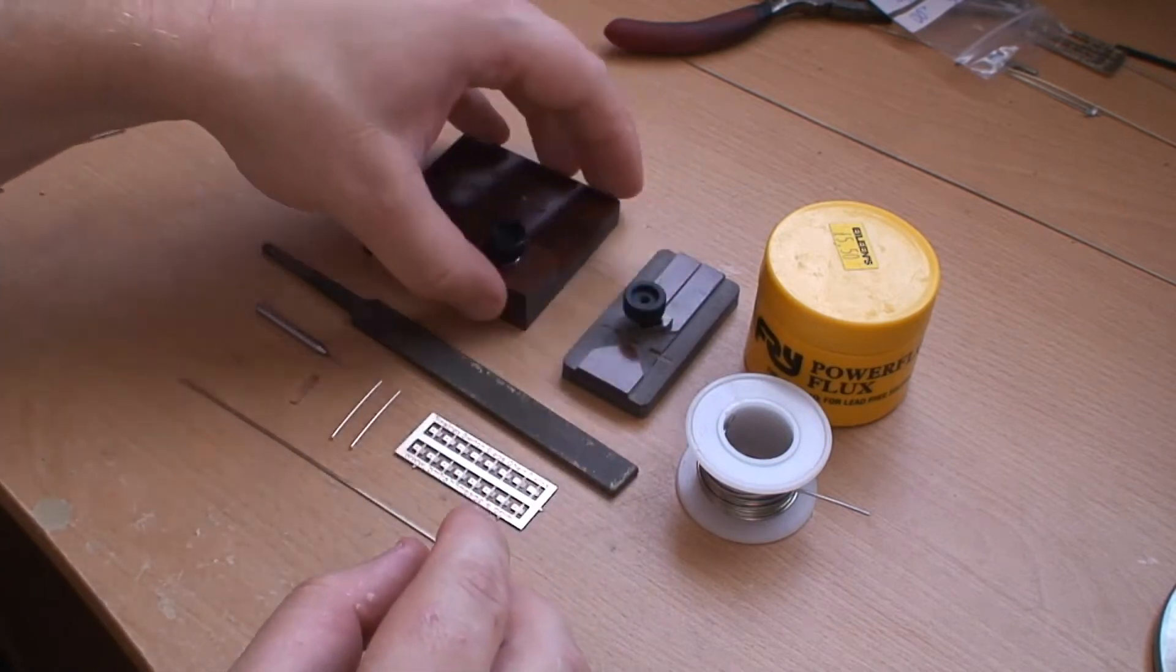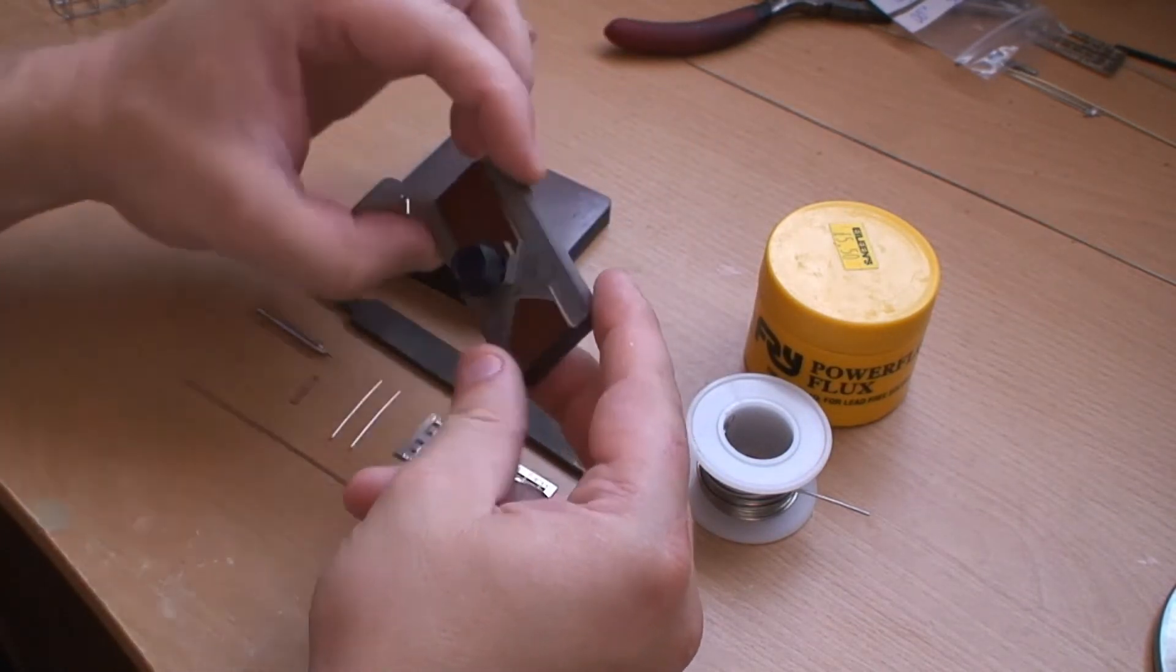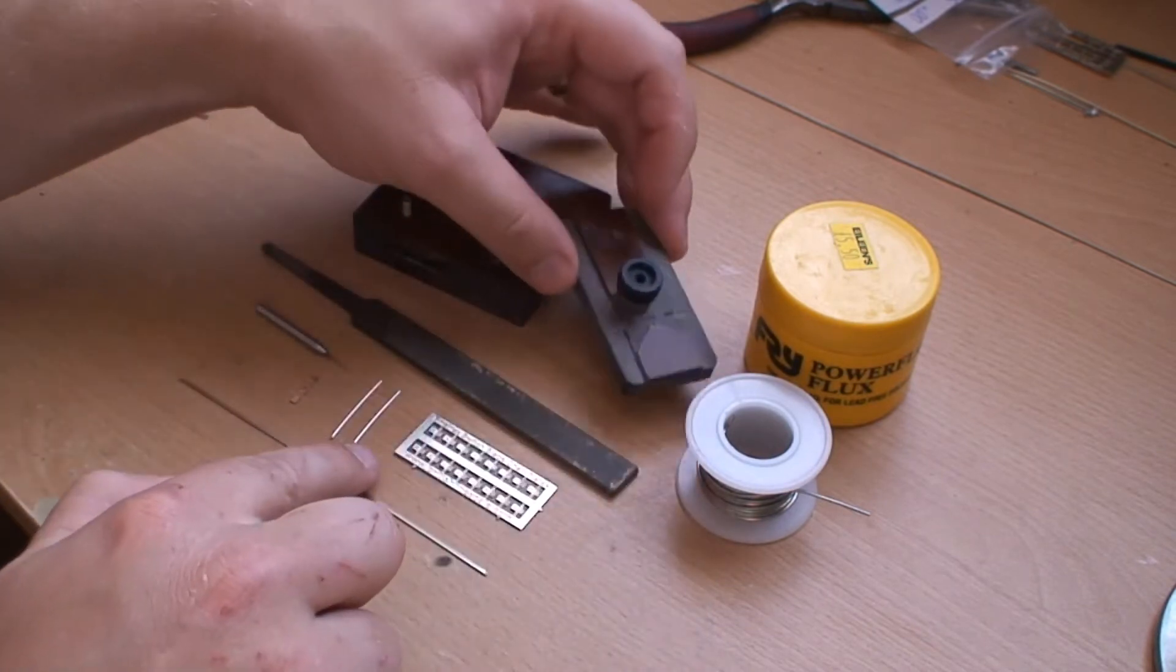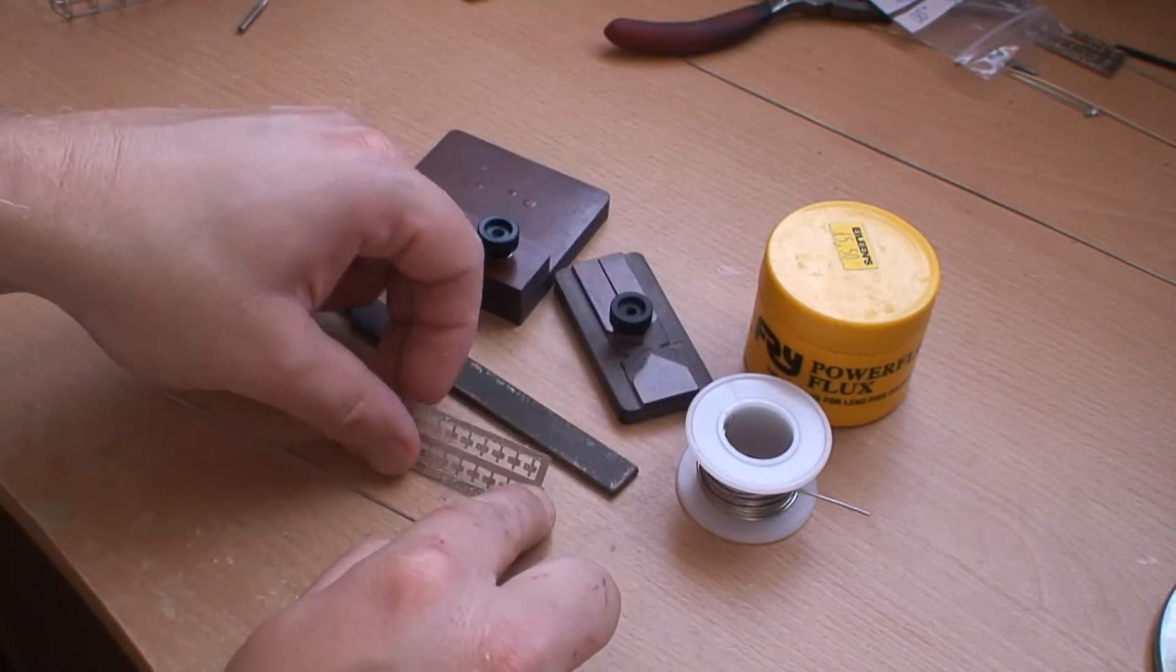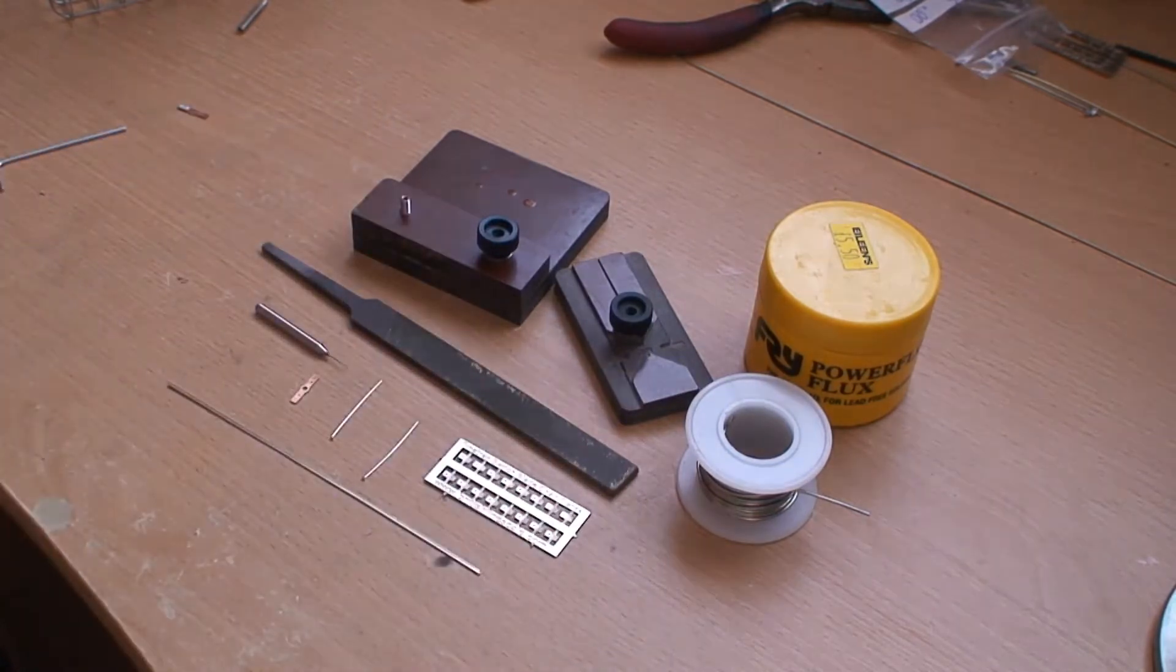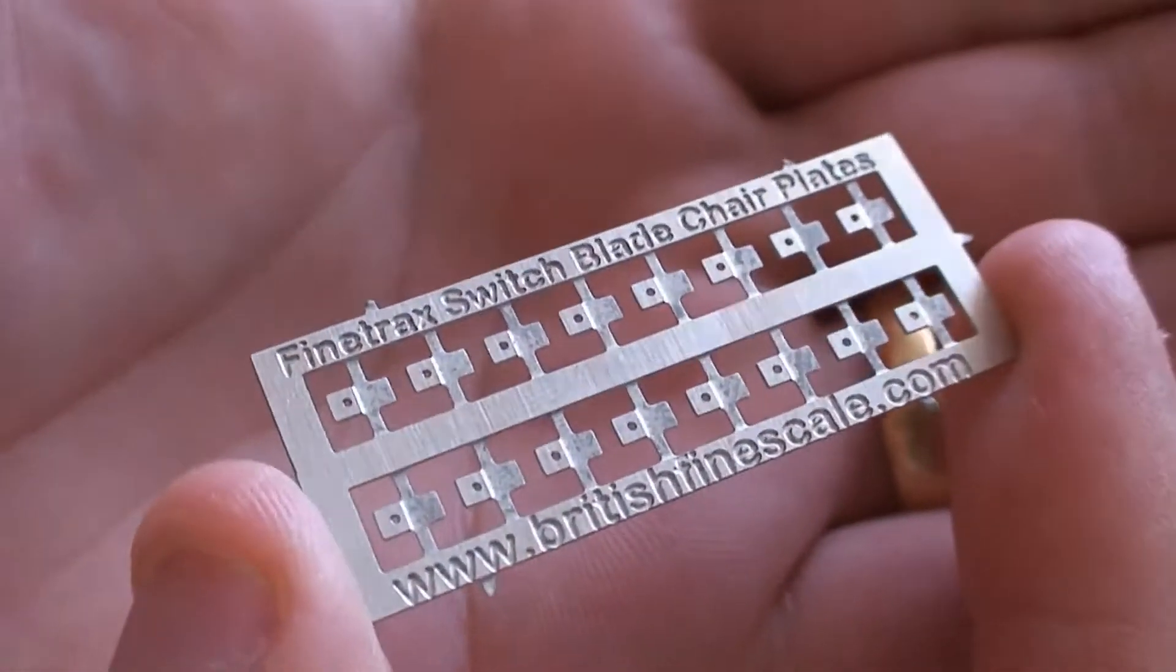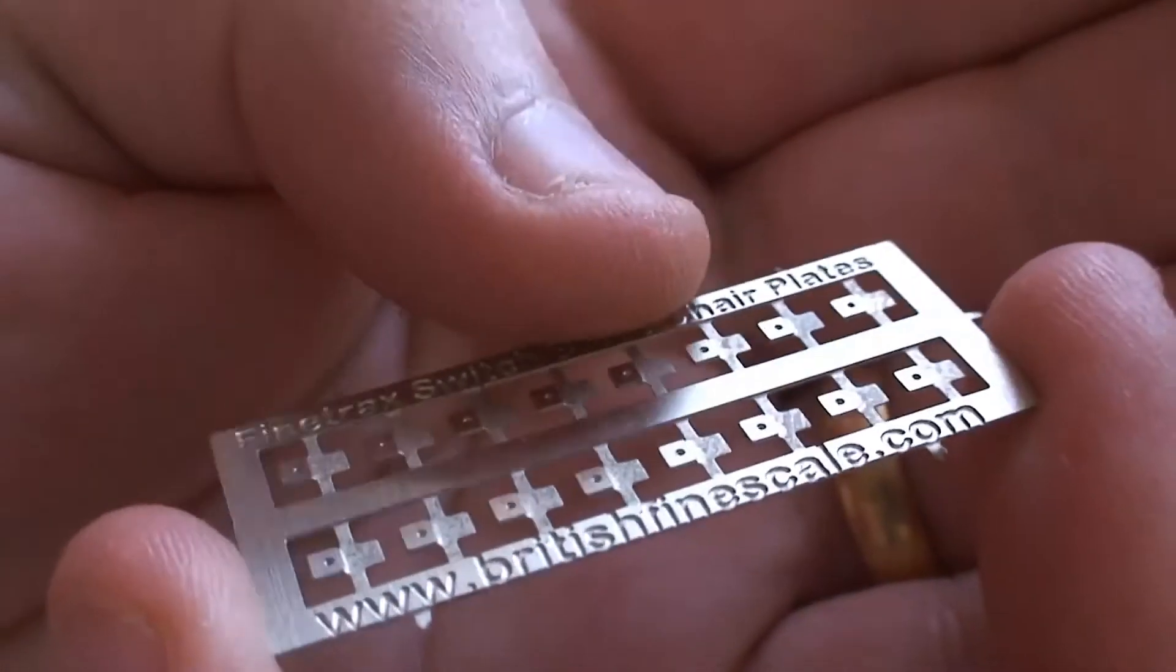Once that's done, you'll be using the assembly jig. This will actually hold the rail onto a chair plate ready for soldering. Okay, so what are chair plates? If I just hold this up to the camera, this is an etch I had made of sixteen chair plates.